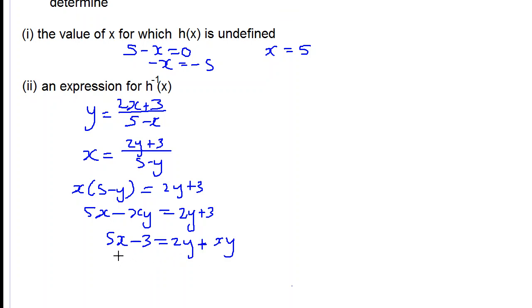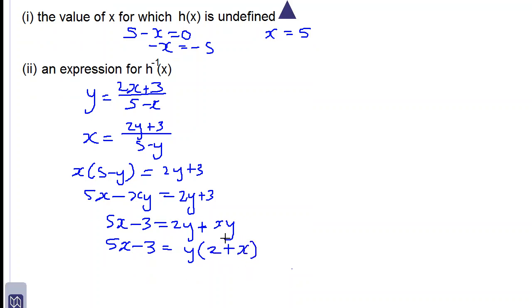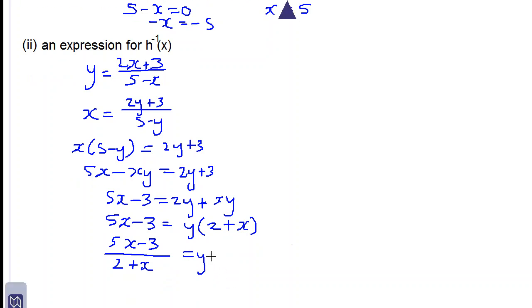We now factorize the expression on the right side of the equal sign, so we have y times 2 plus x. Then we divide both sides by 2 plus x, so we have 5x minus 3 divided by 2 plus x is equal to y. Now we replace y by h inverse of x, so h inverse of x is equal to 5x minus 3 all over 2 plus x.